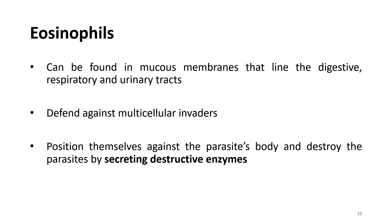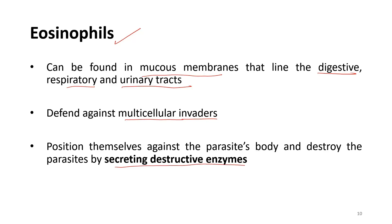Eosinophils can be found in the mucous membranes lining the digestive, respiratory, and urinary tracts. They defend against multicellular invaders like parasites — for example, worms — by secreting destructive enzymes.